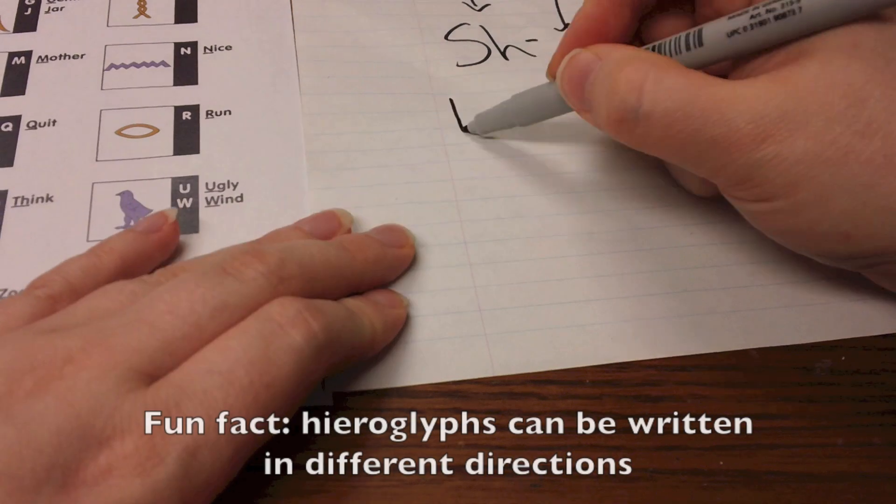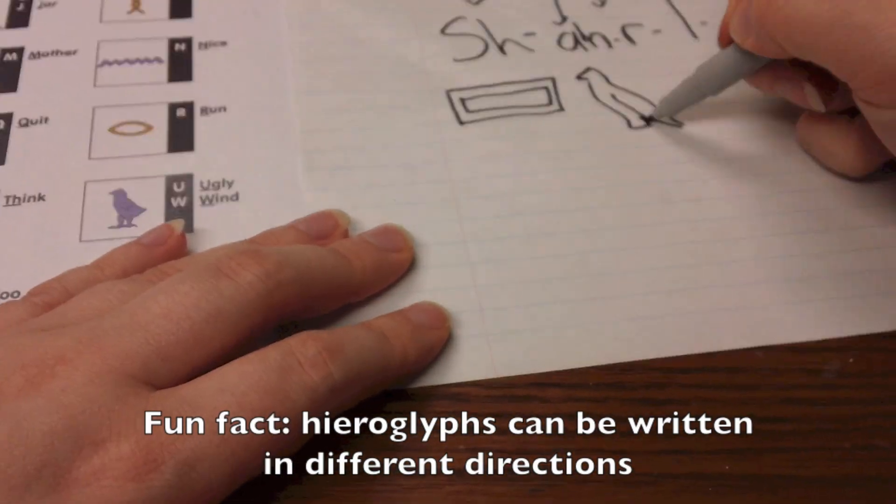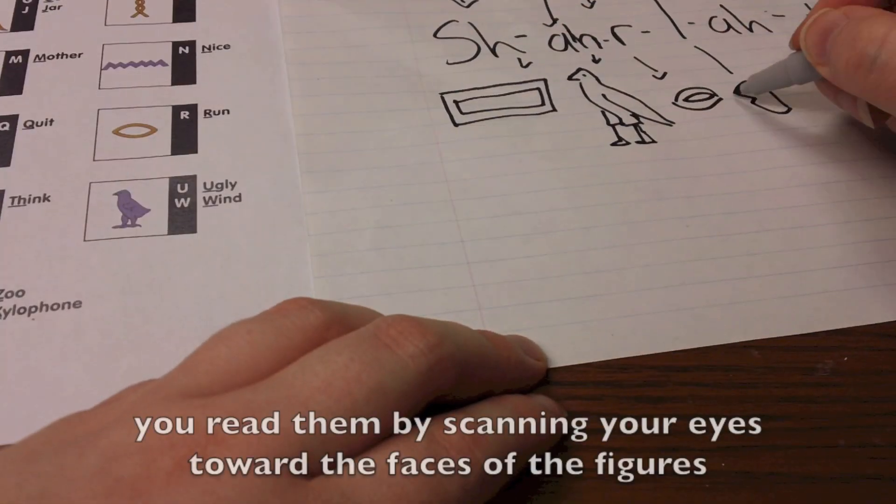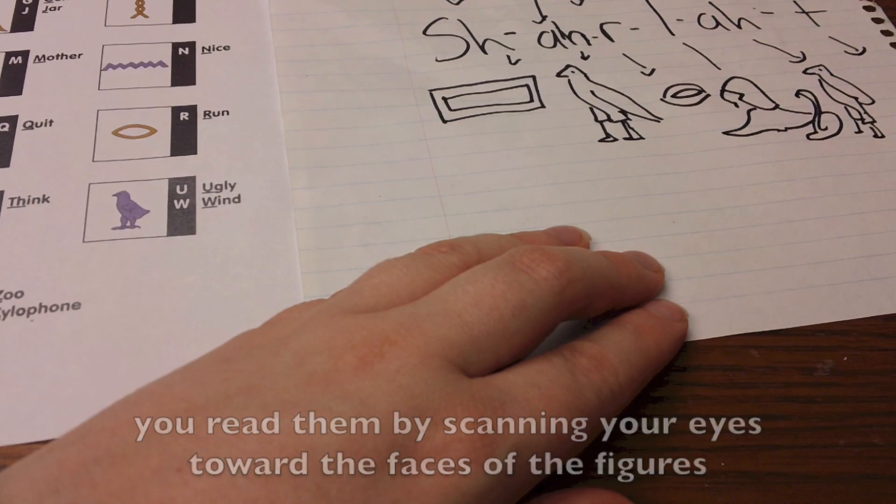Remember the three tricky things to watch out for. Use the hieroglyph key to find hieroglyphs to match each sound in your name. Write each hieroglyph beneath the corresponding sound.